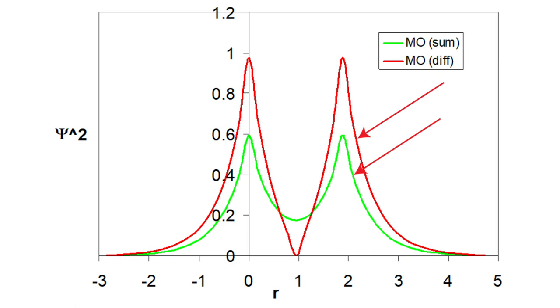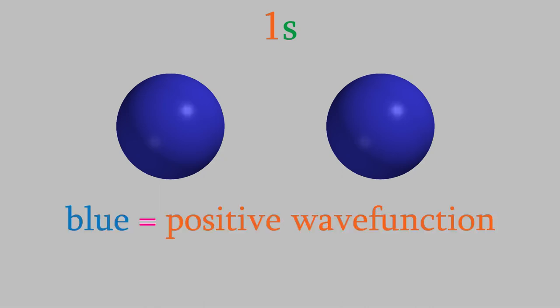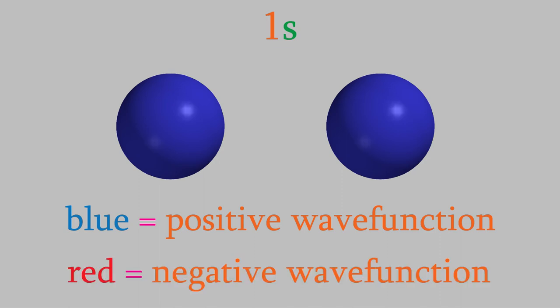First, let's look at 1s orbitals on two separate hydrogen atoms. The color you see here is actually important. As you might remember, this picture of an orbital represents the 1s wave function. A wave function can have both positive and negative values, and in the pictures we'll look at today, the color blue represents areas where the wave function is positive, and red is for areas where the wave function is negative. As you can see in this picture, this wave function is positive everywhere.